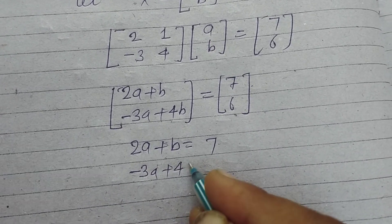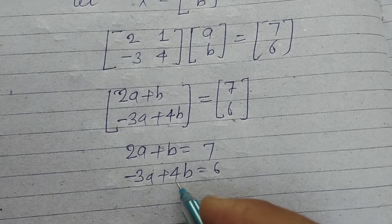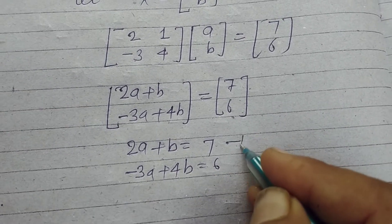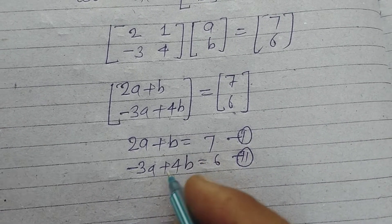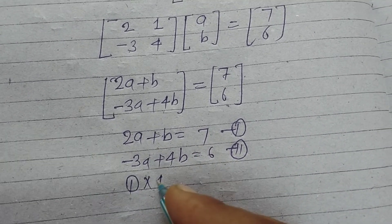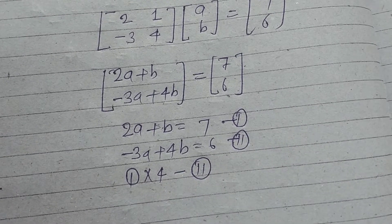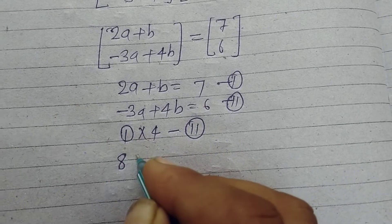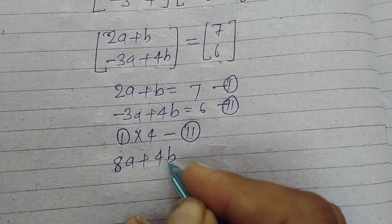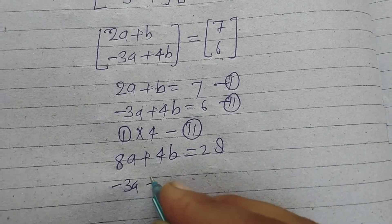And -3a plus 4b equals 6. Now this is equation 1 and this is equation 2. Multiplying first by 4 and subtracting the second from this: 8a plus 4b equals 28, and -3a plus 4b equals 6.